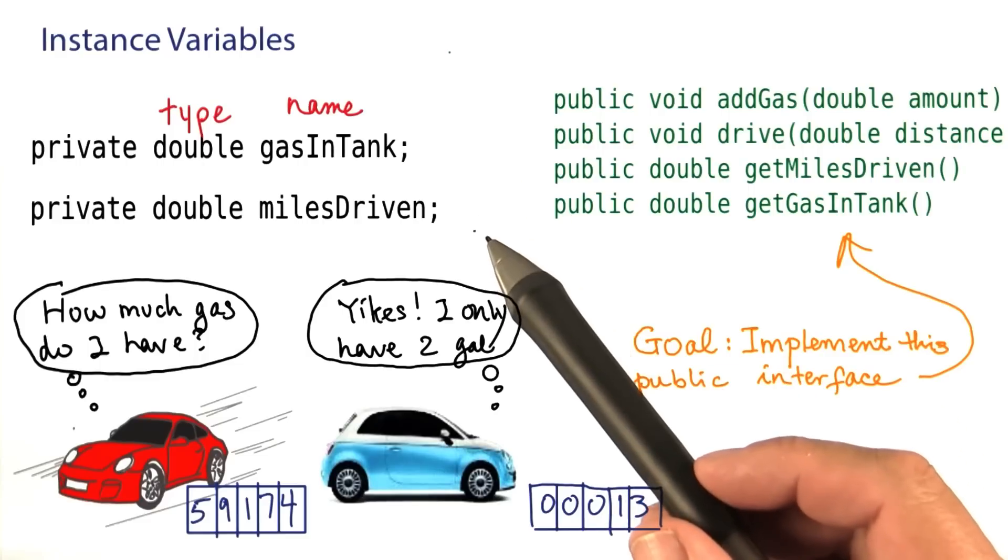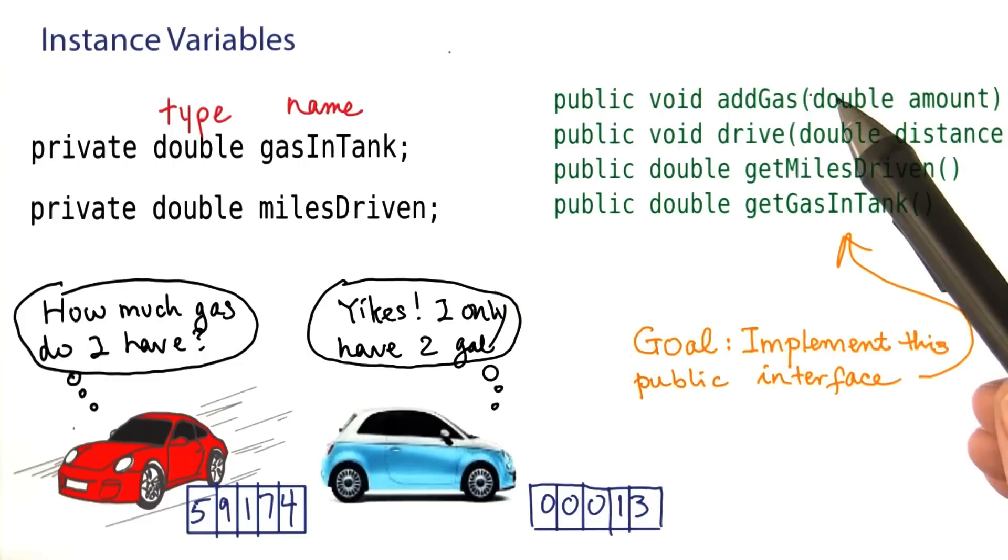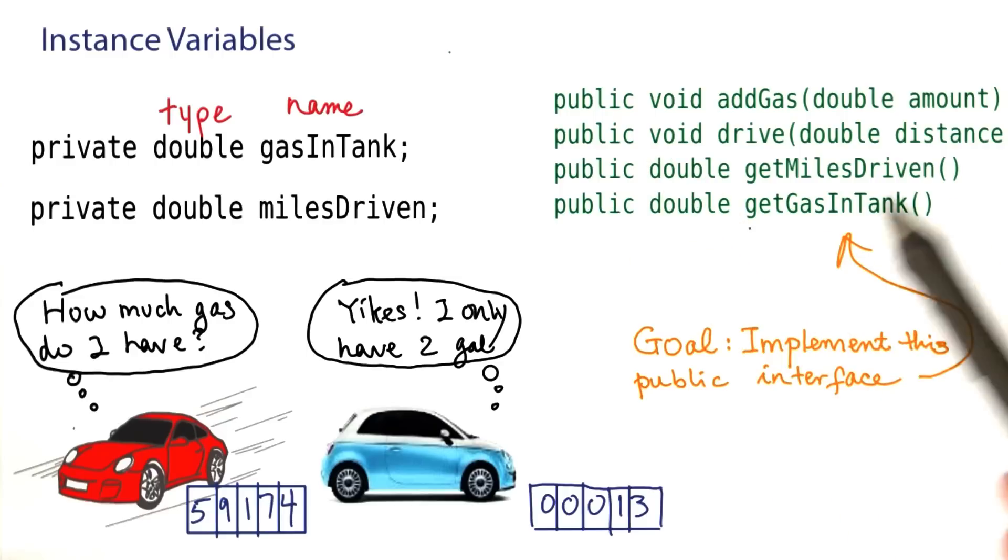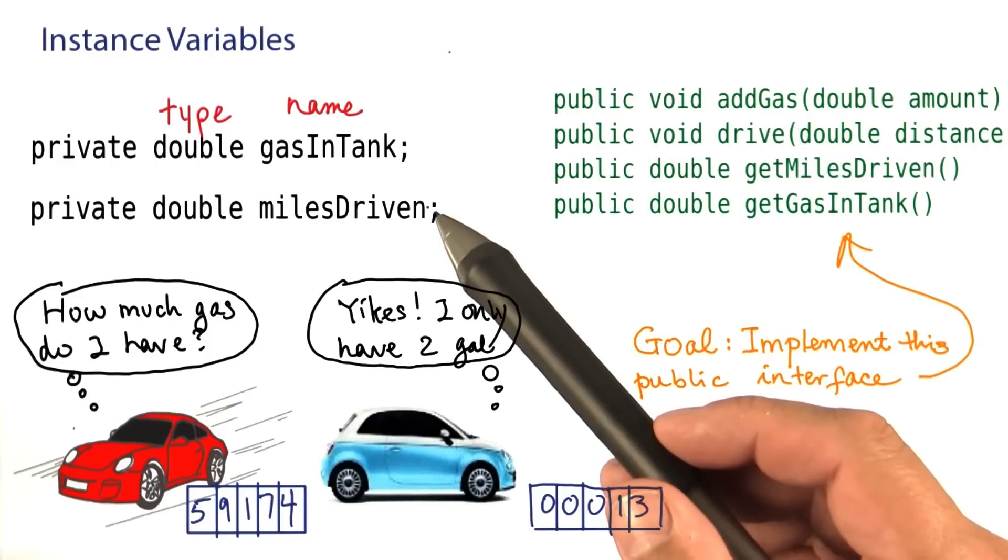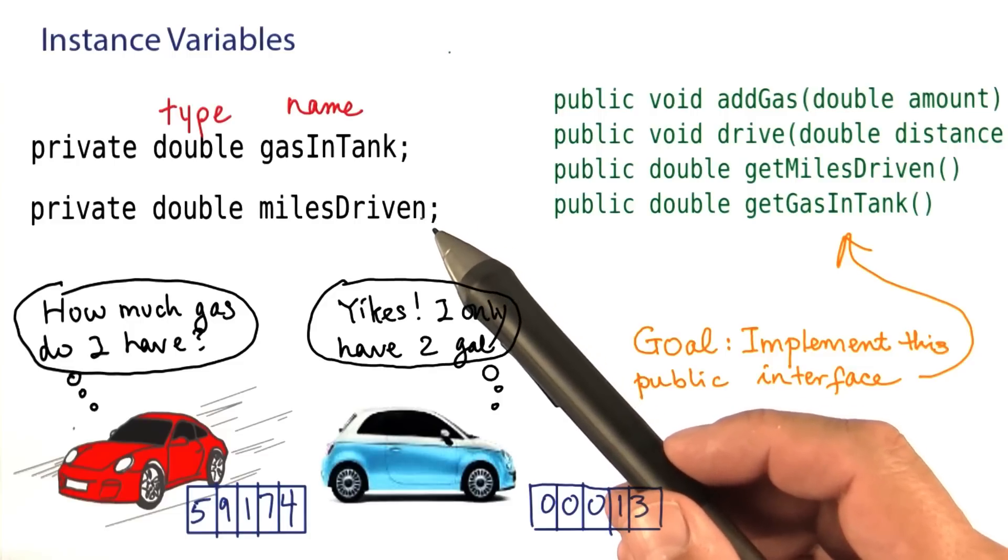These are the two instance variables that we need for the car class. You will soon see how the methods of the car class update or read those instance variables. But first, go ahead and practice with Sarah how to discover the instance variables that we need for the person class.